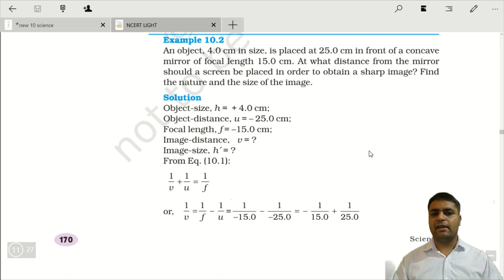Second example kya hai, ki an object, 4.0 cm in size, object ki height de rakhi hai, 4.0 cm, is placed at 25 cm in front of the concave mirror. Hai na, joh concave mirror hai, jiski focal length 15 cm de hui hai, usmein woh object 25 cm ki distance pe rakha hua hai, hai na, toh object distance de rakha u. Clear? Or mirror kaisa hai? Concave mirror. Toh u kya hoga? Negative. Focal length bhi, joh ki concave mirror ki case mein woh kya hoti hai? Negative. And object height de hui hai, 4 cm in size.